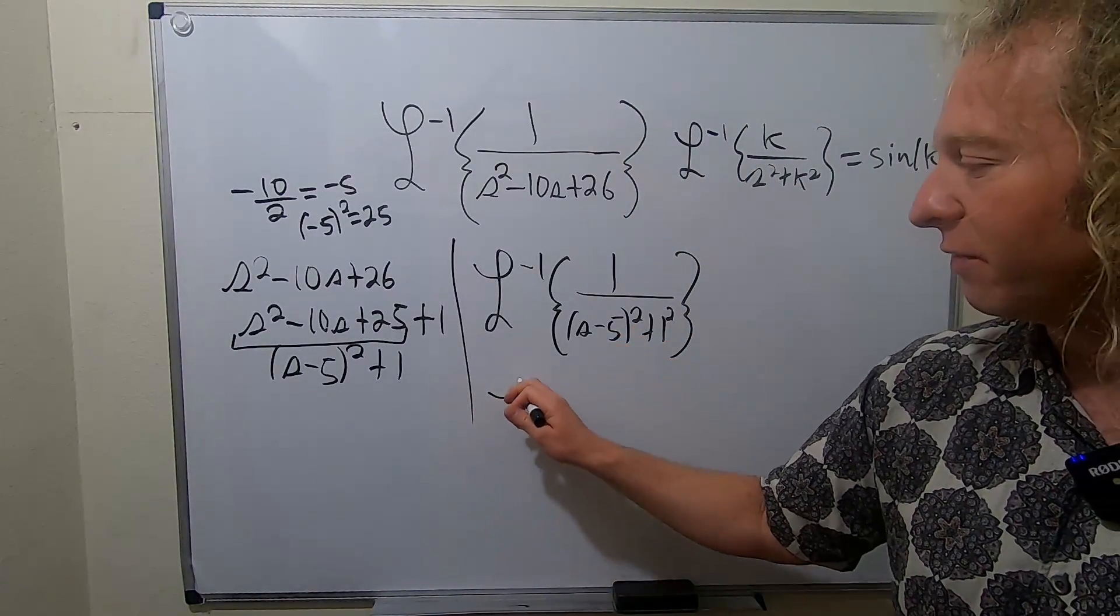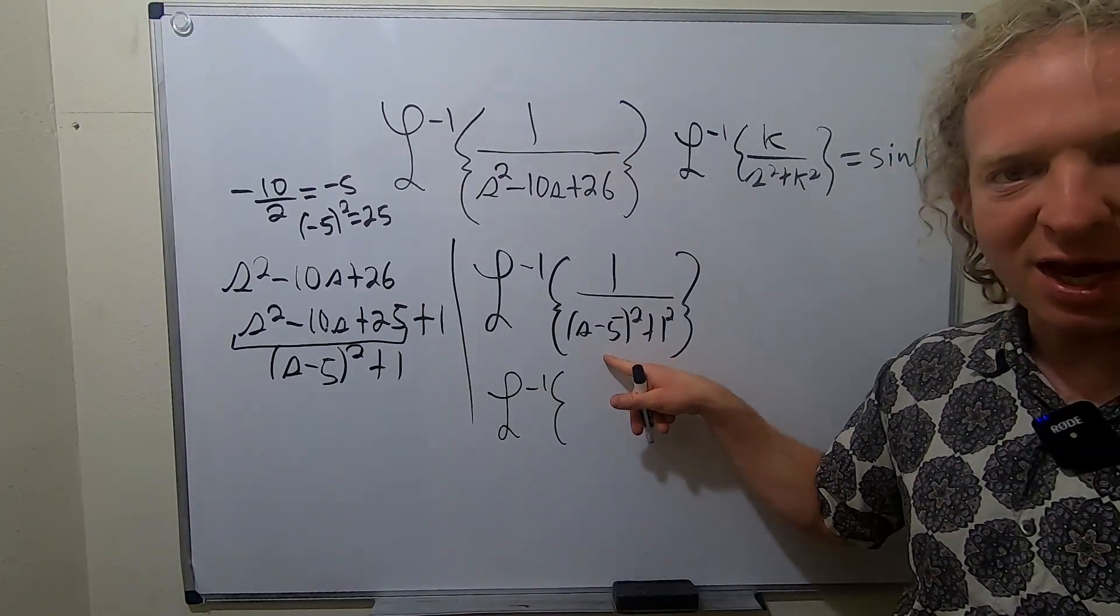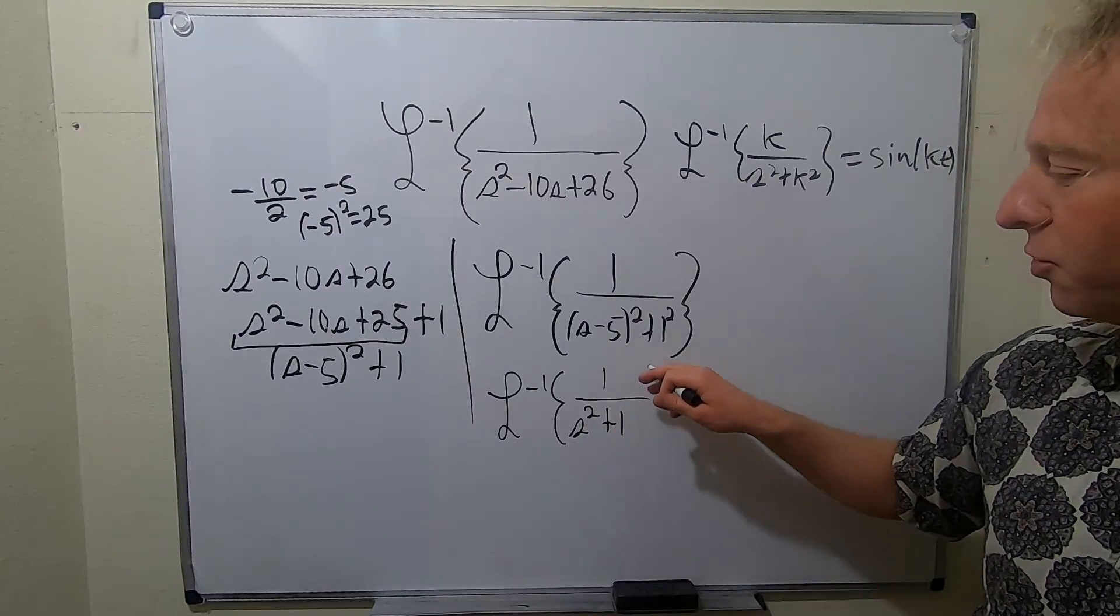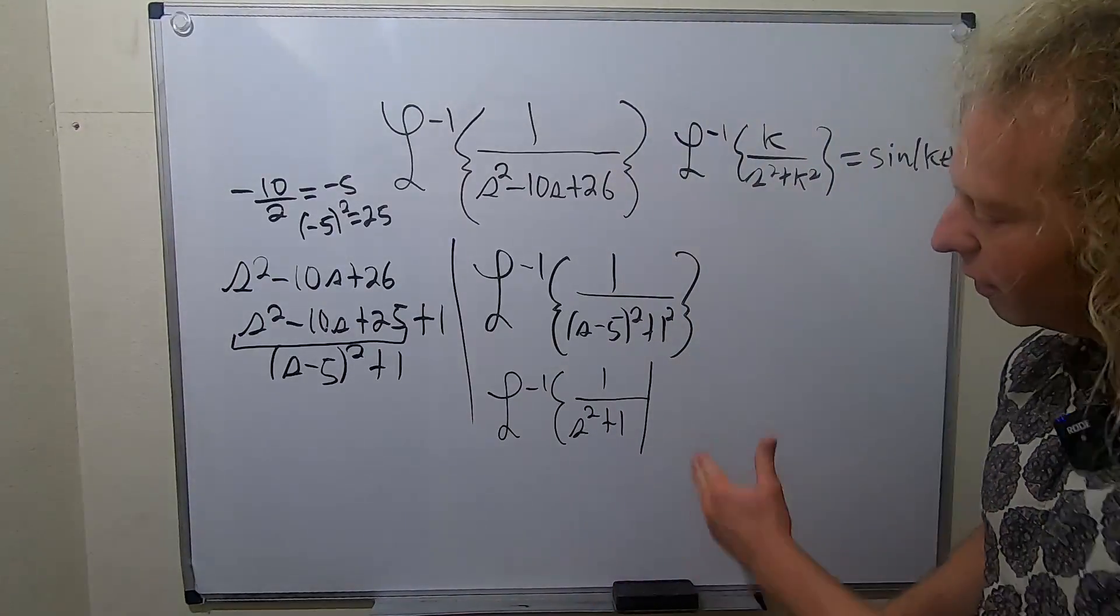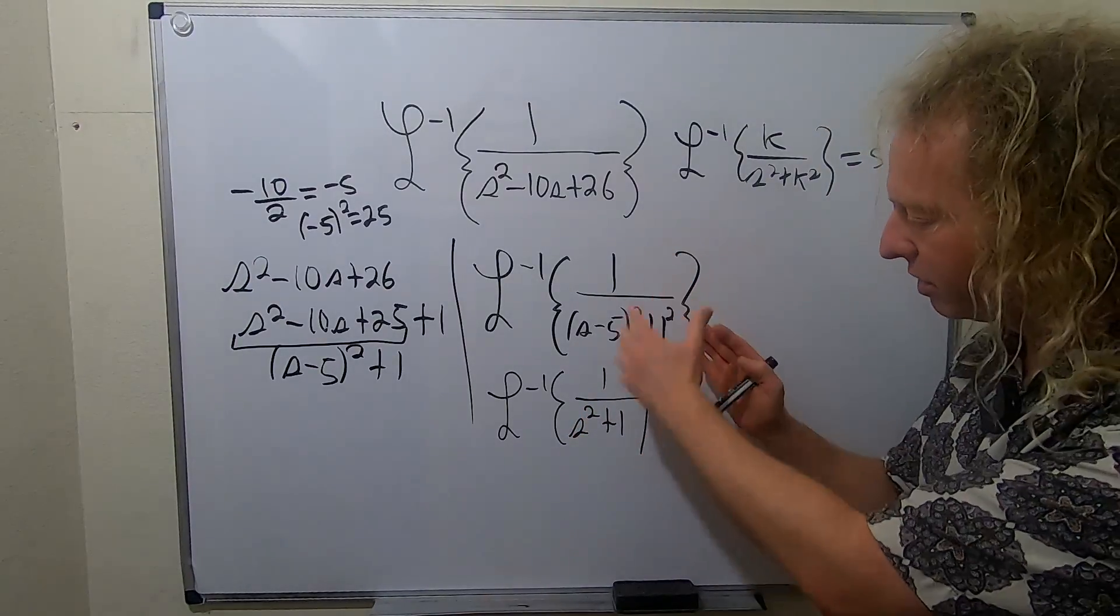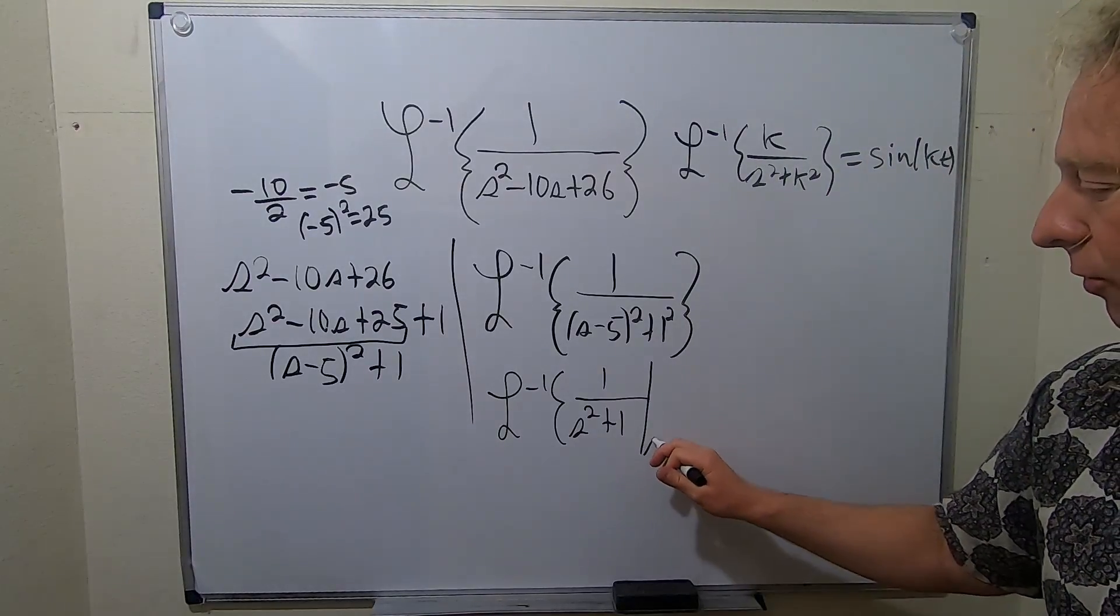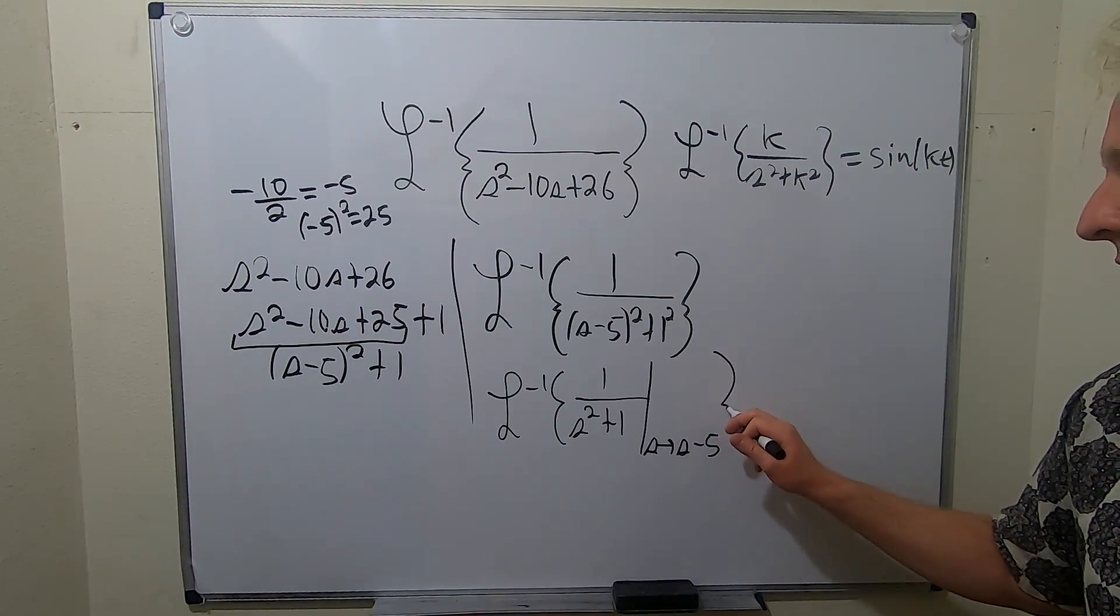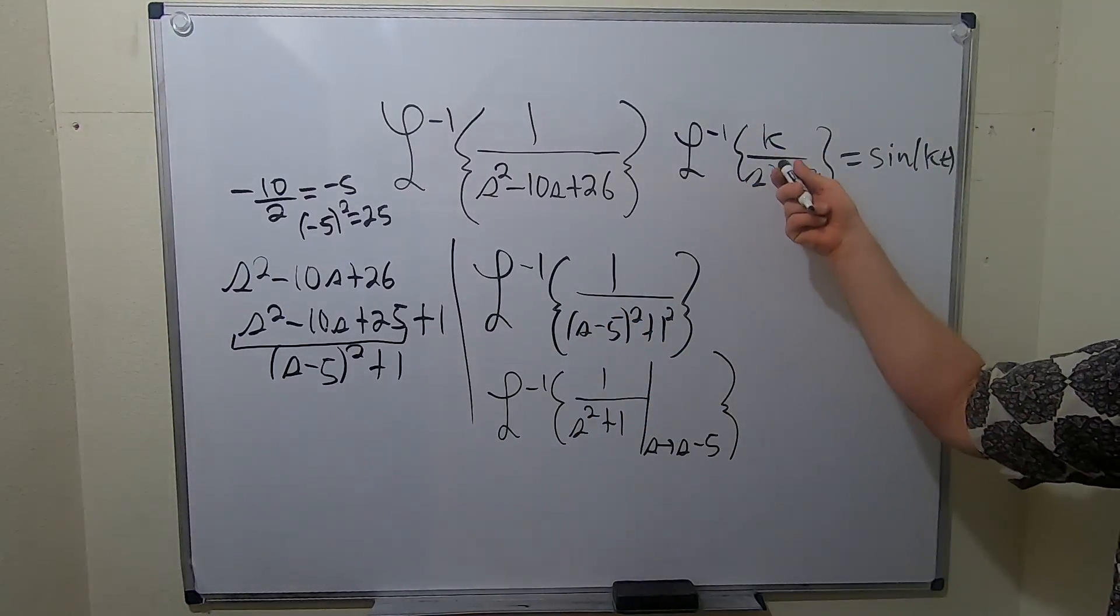So we write the inverse Laplace. And we're just going to replace s minus 5 with s. So this is 1 over s squared plus 1. Then you draw the line to indicate that you're performing the shift. Notice the line is here. It's not like on the outside, because the shift takes place in the s space. So here we're going from s to s minus 5. And then you close the bracket.